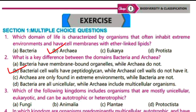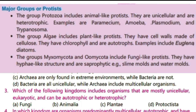Question number 3: which of the following kingdoms includes organisms that are mostly unicellular, eukaryotic, and can be autotrophic or heterotrophic? Options: Fungi, Animalia, Plantae, Protista. Kingdom Protista has three groups. The first group is Protozoa, which are animal-like protists — unicellular and heterotrophic. For example, Paramecium.